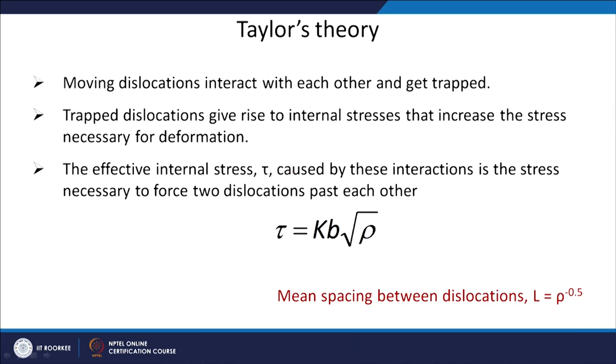Taylor's theory states that moving dislocations interact with each other and get trapped. Trapped dislocations give rise to internal stresses that increase the stress necessary for deformation. The effective internal stress τ caused by these interactions is the stress needed to force two dislocations past each other. The stress as a function of dislocation density ρ can be expressed as τ = f(G·b·√ρ), where b is the Burgers vector.